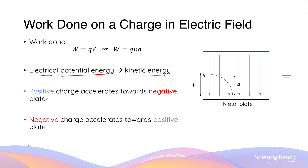A positive charge placed inside an electric field will start to accelerate towards the negatively charged metal plate. As it approaches the negatively charged plate, it gains speed and kinetic energy while its electrical potential energy decreases. Conversely, a negative charge will accelerate towards the positively charged plate, gaining speed and kinetic energy while losing electrical potential energy.